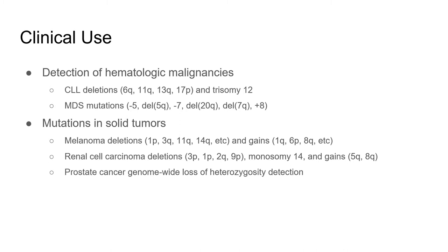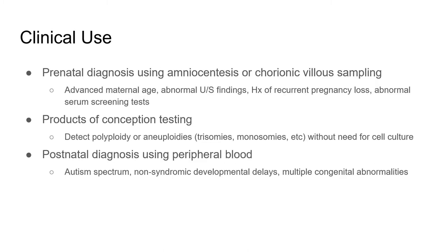Microarray studies can be used in a number of ways, such as in the detection of hematologic malignancies like CLL, or mutations in solid tumors like renal cell carcinoma and melanoma. They can also be used in prenatal and postnatal diagnosis of genetic diseases. As we continue to understand the significance of these variations, the utility of microarrays will increase.